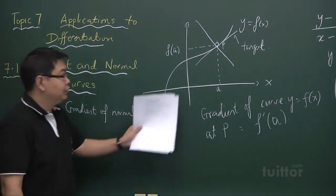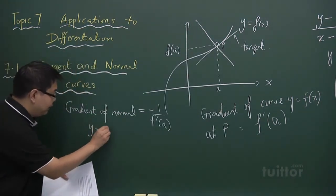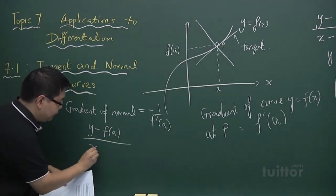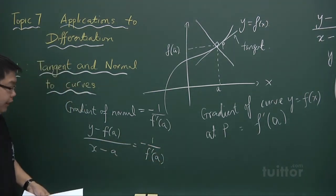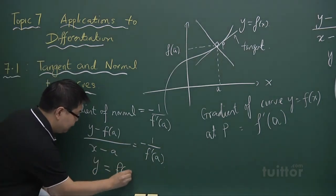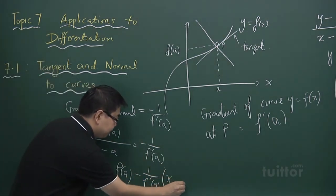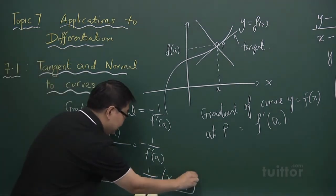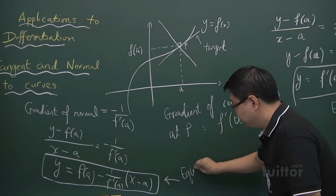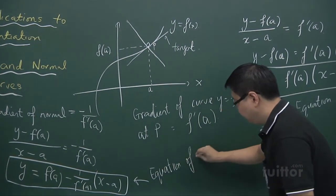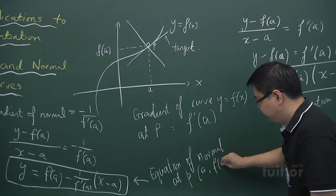Knowing the gradient of the normal, as well as knowing that the normal passes through the point (a, f(a)) will allow me to find the equation of the normal, which is y minus f(a) over x minus a equals minus 1 over f prime of a. And rearranging it, we have y equals f(a) minus 1 over f prime of a multiplied by (x minus a). Now this is the equation of the normal at the point P, which is (a, f(a)).